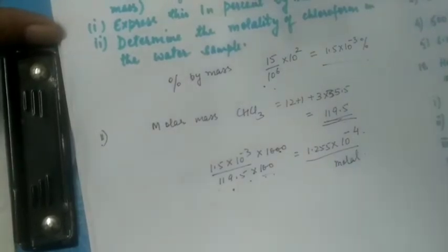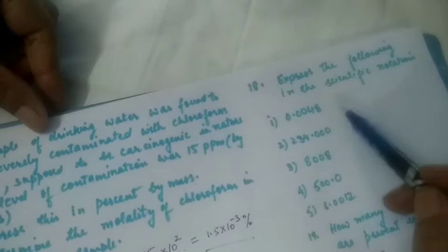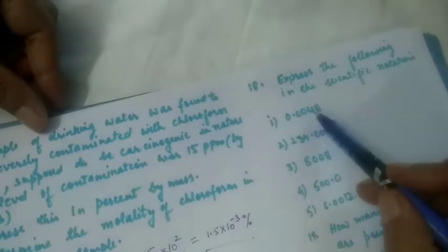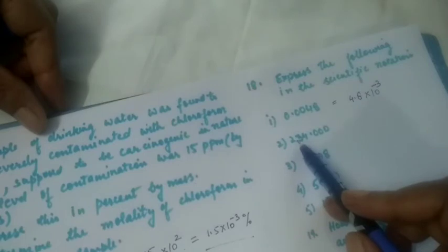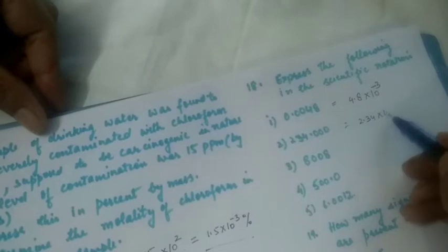Next: express the following in scientific notation. Scientific notation is written as a number between 1 and 10 multiplied by 10 raised to power n. The first non-zero digit should be before the decimal. So 0.0048 becomes 4.8×10⁻³, and 234 becomes 2.34×10².